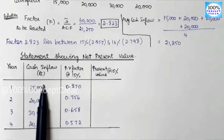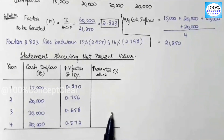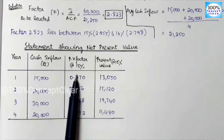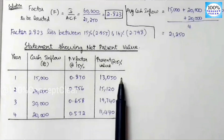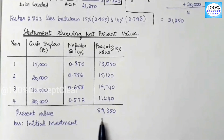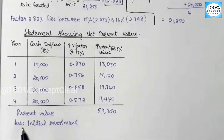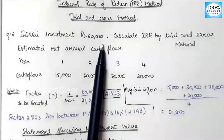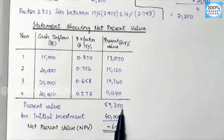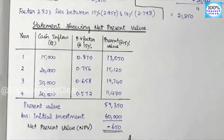The formula is cash inflow multiplied by PV factor. We multiply each cash inflow by its PV factor and add all the present values. The total present value at 15% is 59,350. So the NPV = 59,350 minus 60,000 (initial investment) equals minus 650. At 15%, NPV is minus 650.